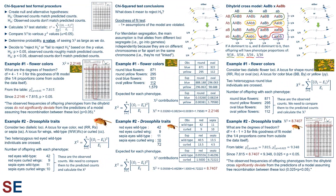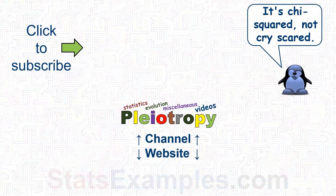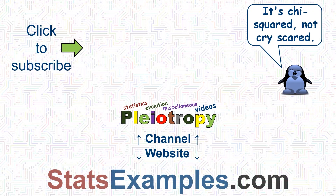This video looked at the most common analysis of a dihybrid cross, when both loci have alleles in which one is dominant. Things can be more complicated if one or more of the alleles are codominant, but the principle and procedure is essentially the same. There's a high-resolution PDF of this screen on Stats Examples' website. Click to subscribe if you found this video useful, or like and share if you think others will too.